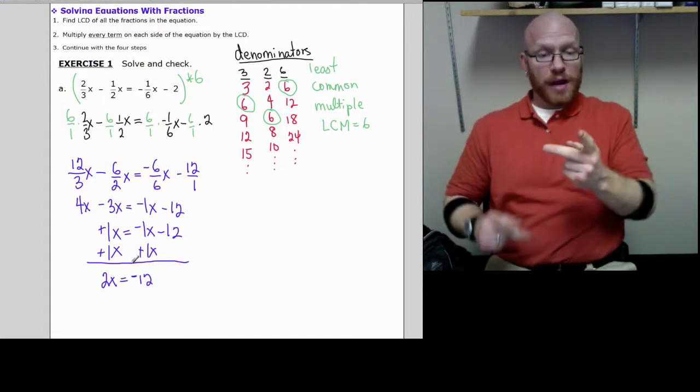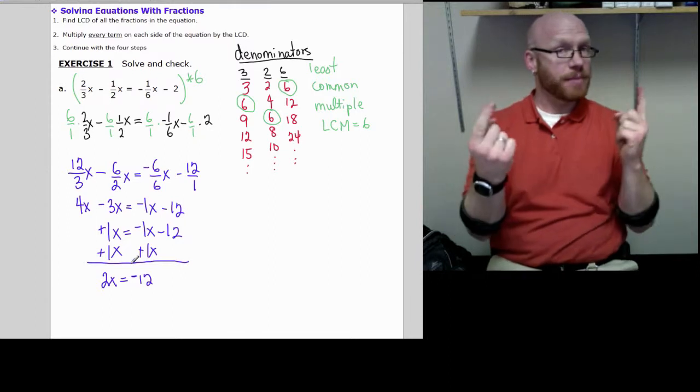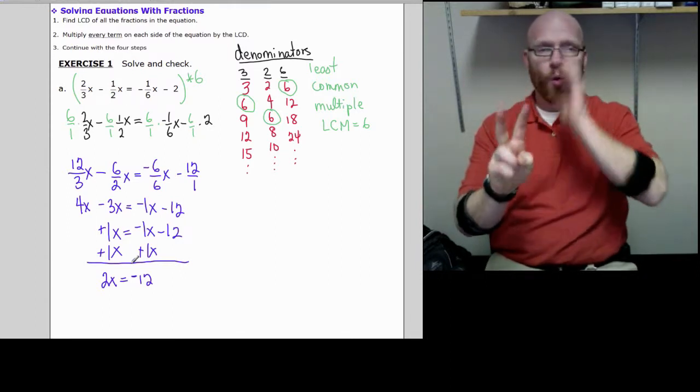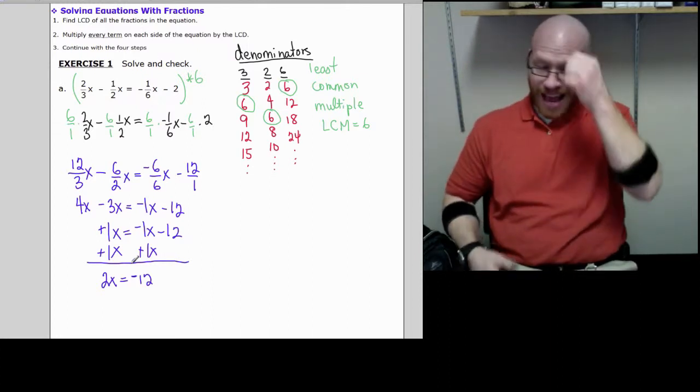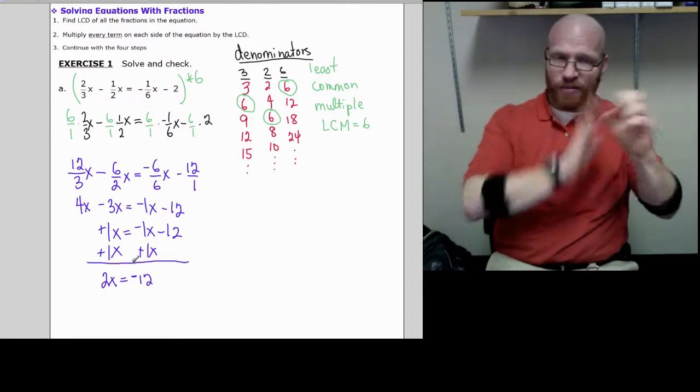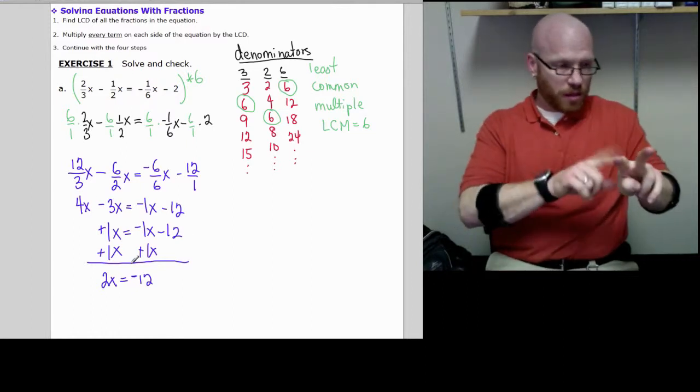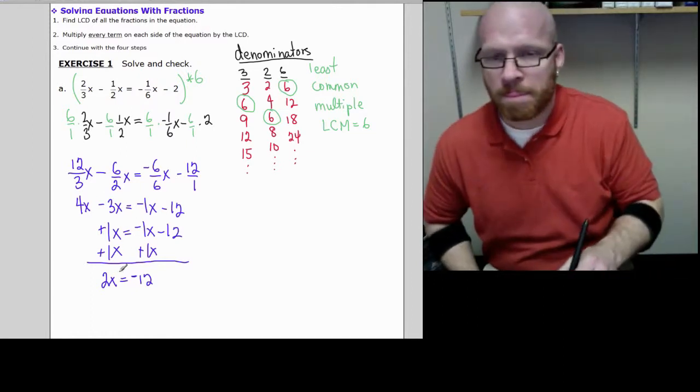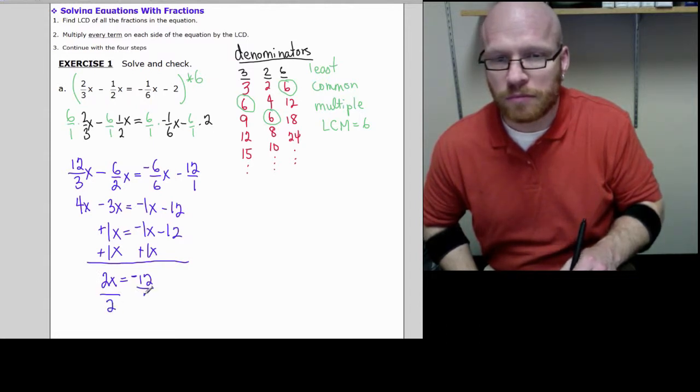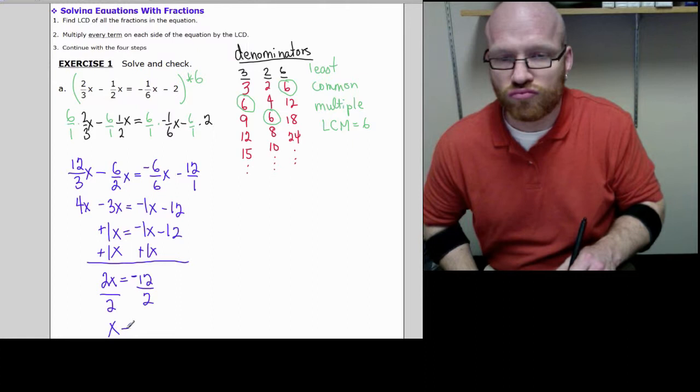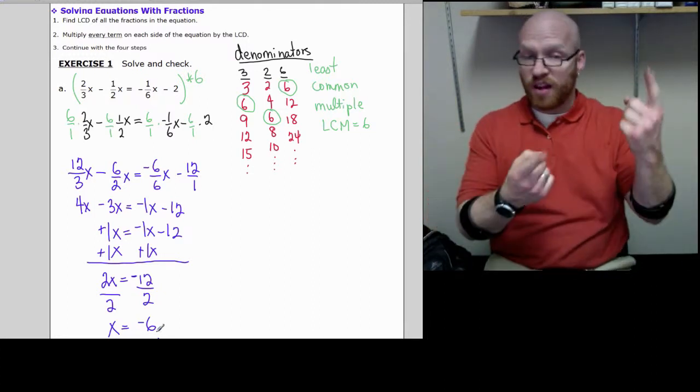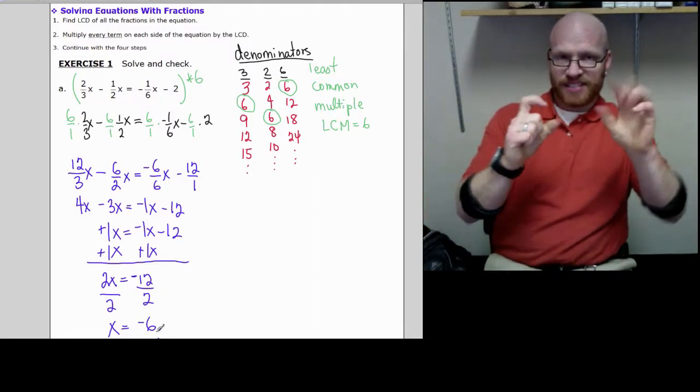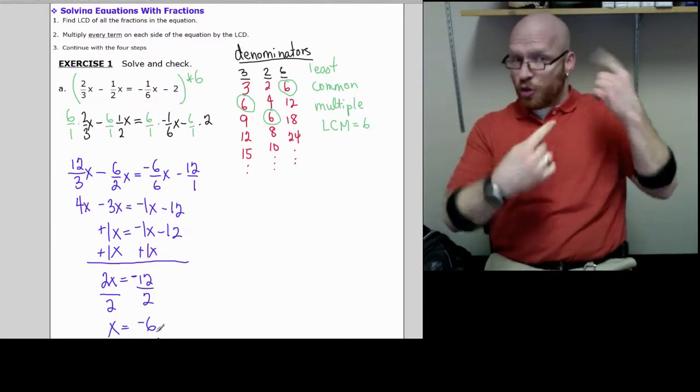Now we have 2 times x, the opposite of 2 times would be 2 divide. So 2x divided by 2, remember I can't ignore the negative 12, I have to divide 2 over here as well. Thus far we have x equals negative 6, that's my answer so far.